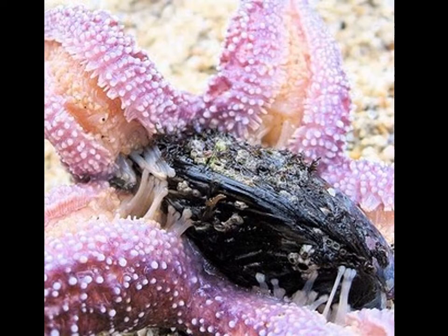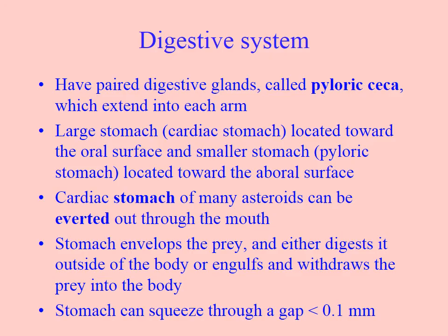The second stomach is where a lot of the juices are sucked up, further digested, and shared around the rest of the body. The digestive glands are called pyloric caeca. The stomach closest to the mouth is called the cardiac stomach, and the upper stomach is called the pyloric stomach.